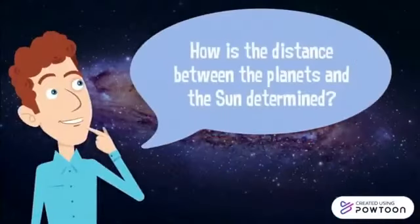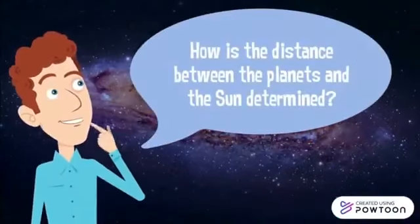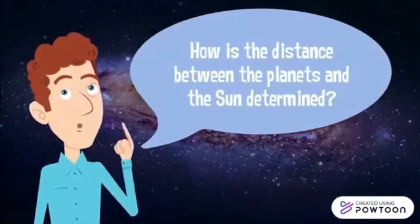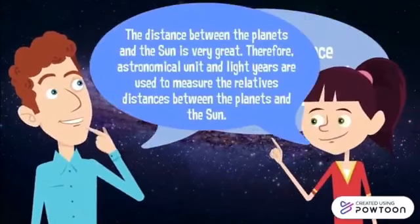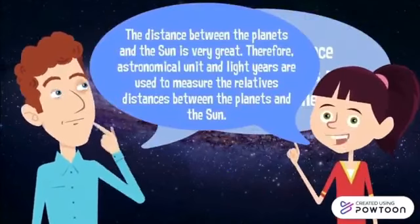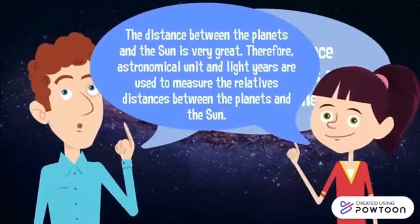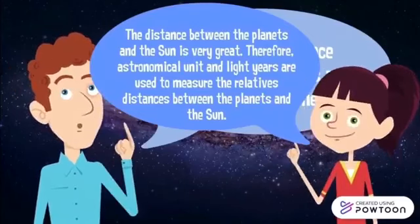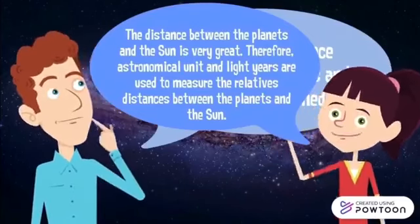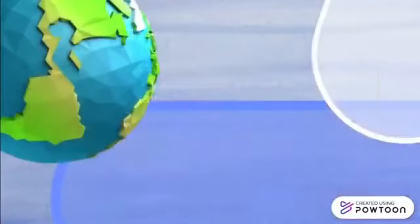How is the distance between planets and the sun determined? The distance between the planet and the sun is very great, therefore astronomical units and light years are used to measure the relative distance between the planets and the sun.